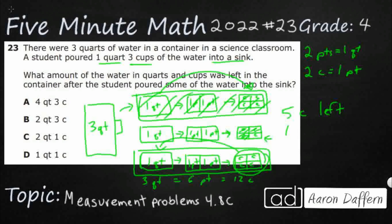So five cups is really one quart and one cup left. So that's what this row and that one little guy right there is. So my answer is D.